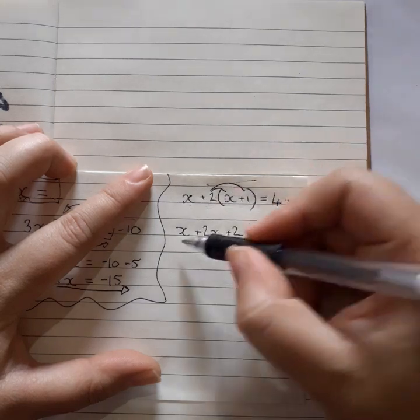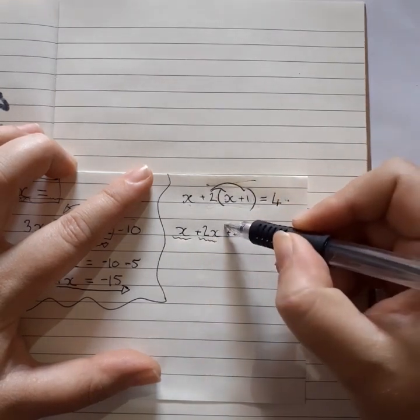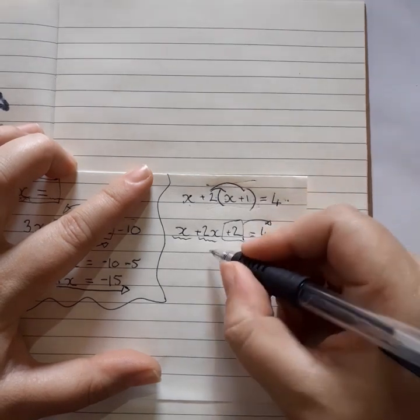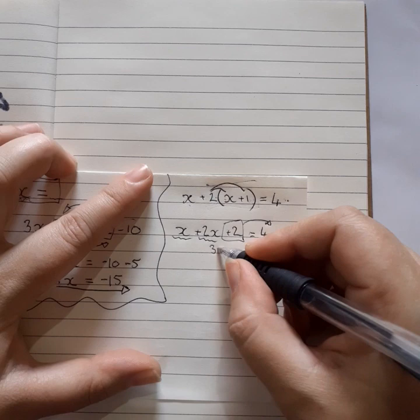Okay, now we can get all the x's by itself on the one hand. And all the numbers on the other side. Okay, so then we've got x plus 2 is 3x.